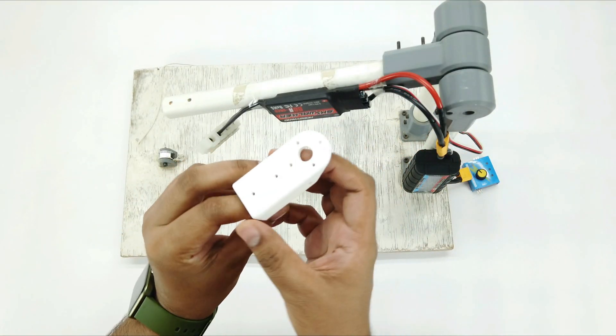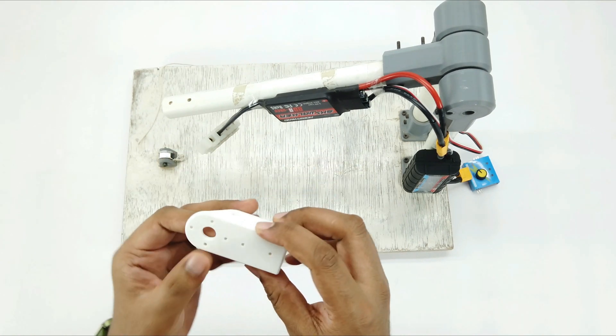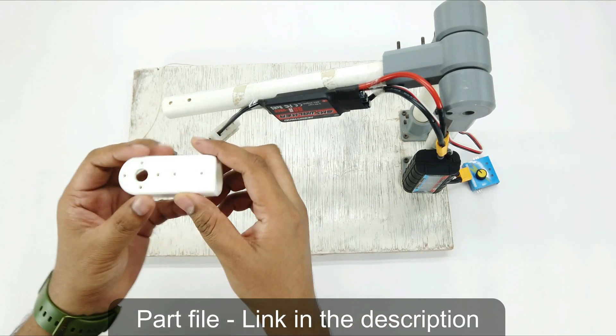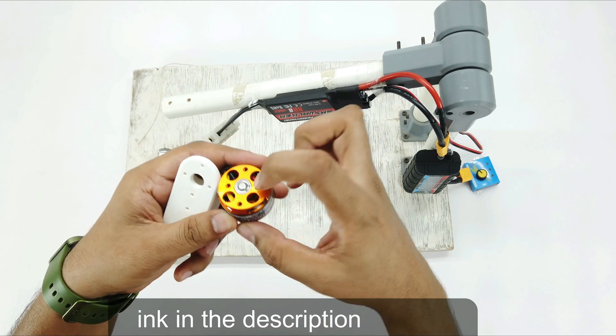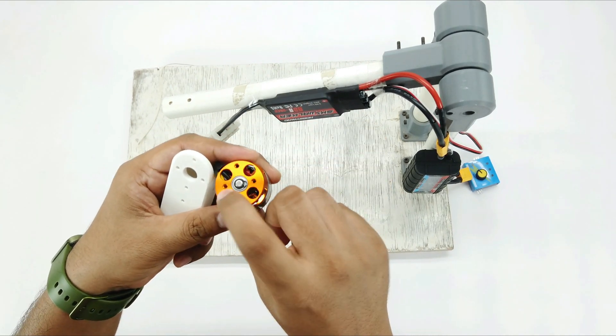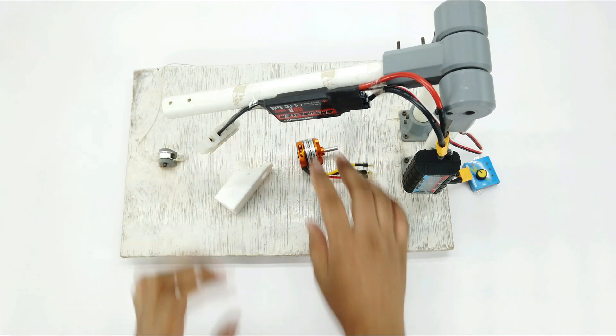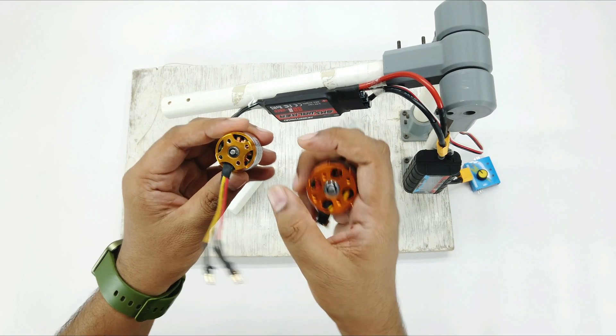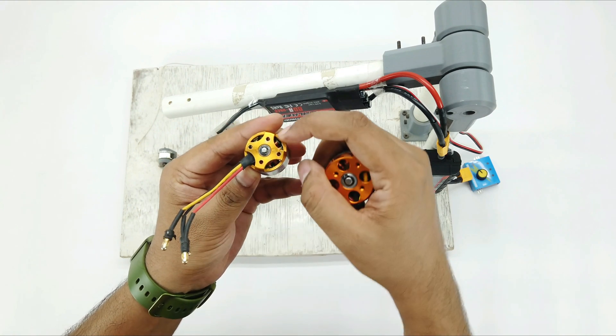I have designed a new connector and 3D printed it as well. So this connector is for DYS series motors. Because as you can see these two holes are at a distance of 25mm while these two have a distance of 19mm. But the smaller motor has a distance of 19mm and 16mm.